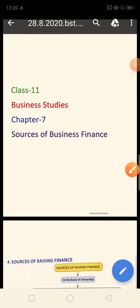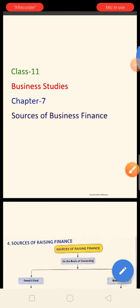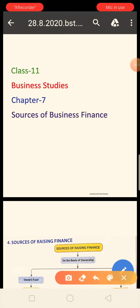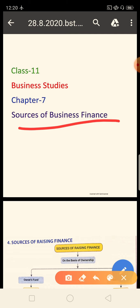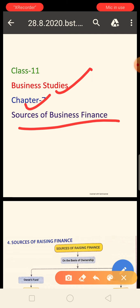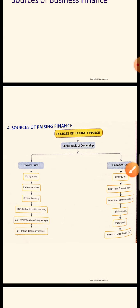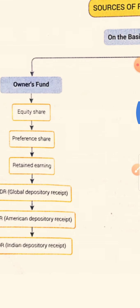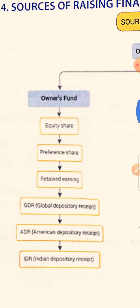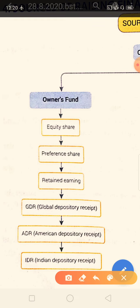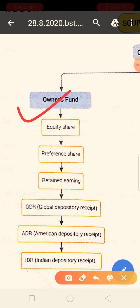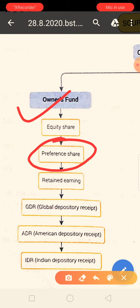Good morning, dear students. As you know, the sources of business finance chapter is currently going on in business studies — this is chapter number seven. Today we will discuss owners' fund, specifically preference shares.